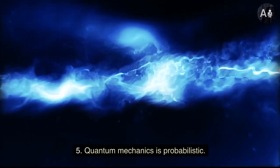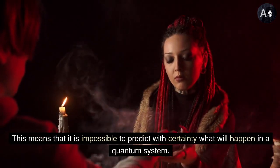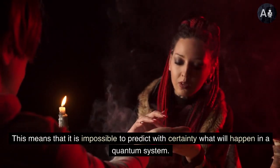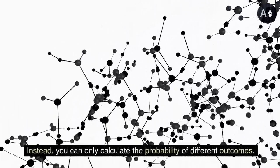Quantum mechanics is probabilistic. This means that it is impossible to predict with certainty what will happen in a quantum system. Instead, you can only calculate the probability of different outcomes.